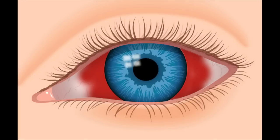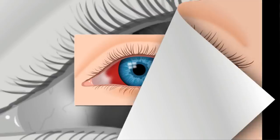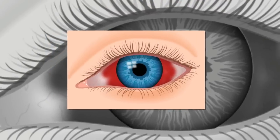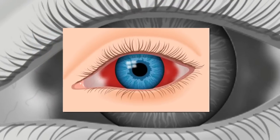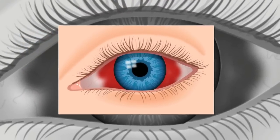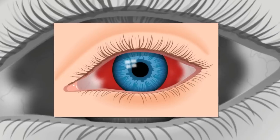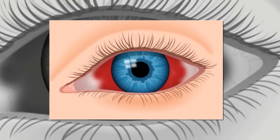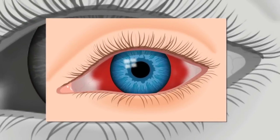An eye hemorrhage is a condition where blood vessels inside the eye rupture and bleed, leaving red splotches on the white of the eye, in the retina, or between the retina and the lens. Diabetes, high blood pressure, and eye strain are some factors that can cause eye hemorrhages.